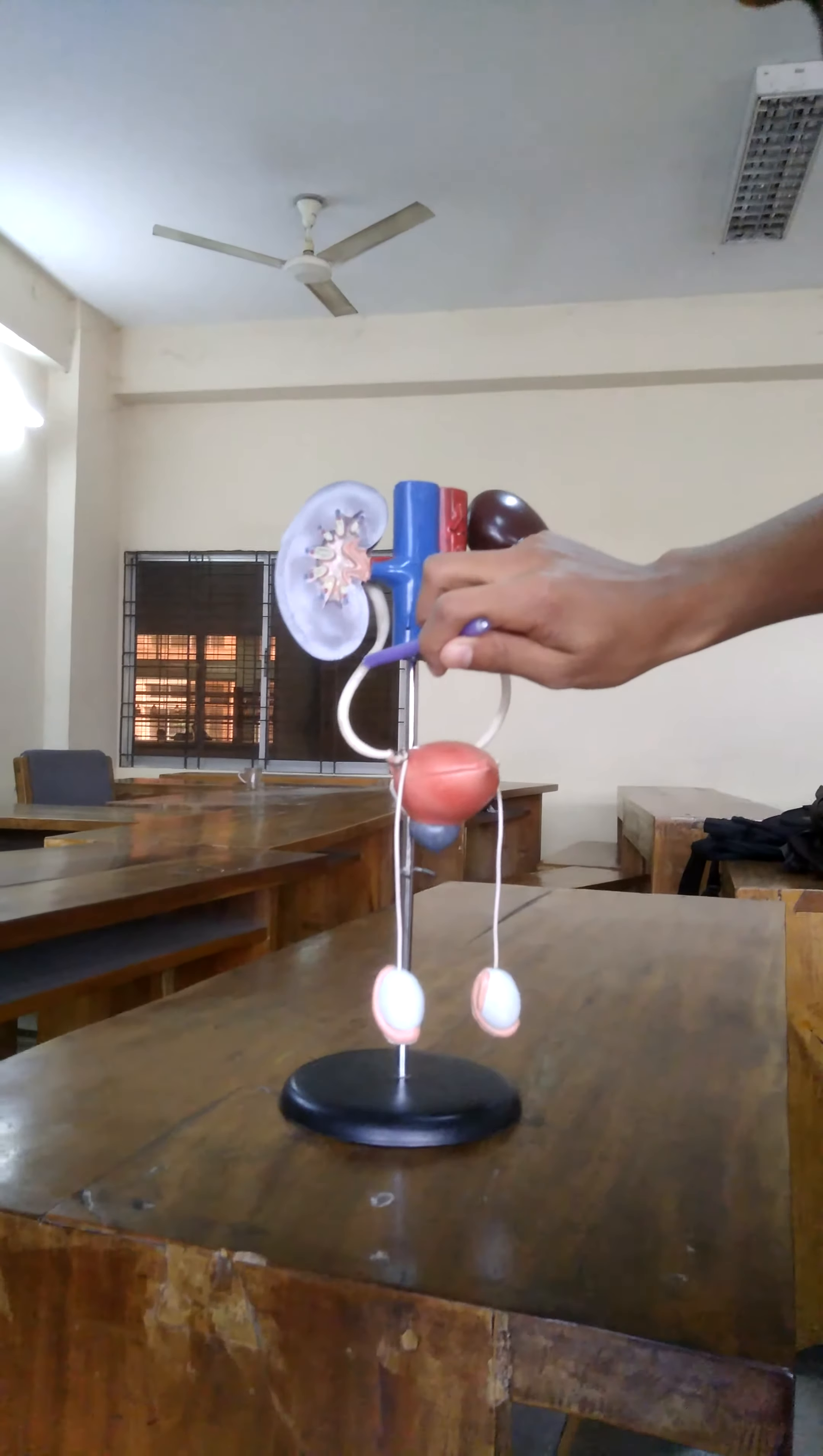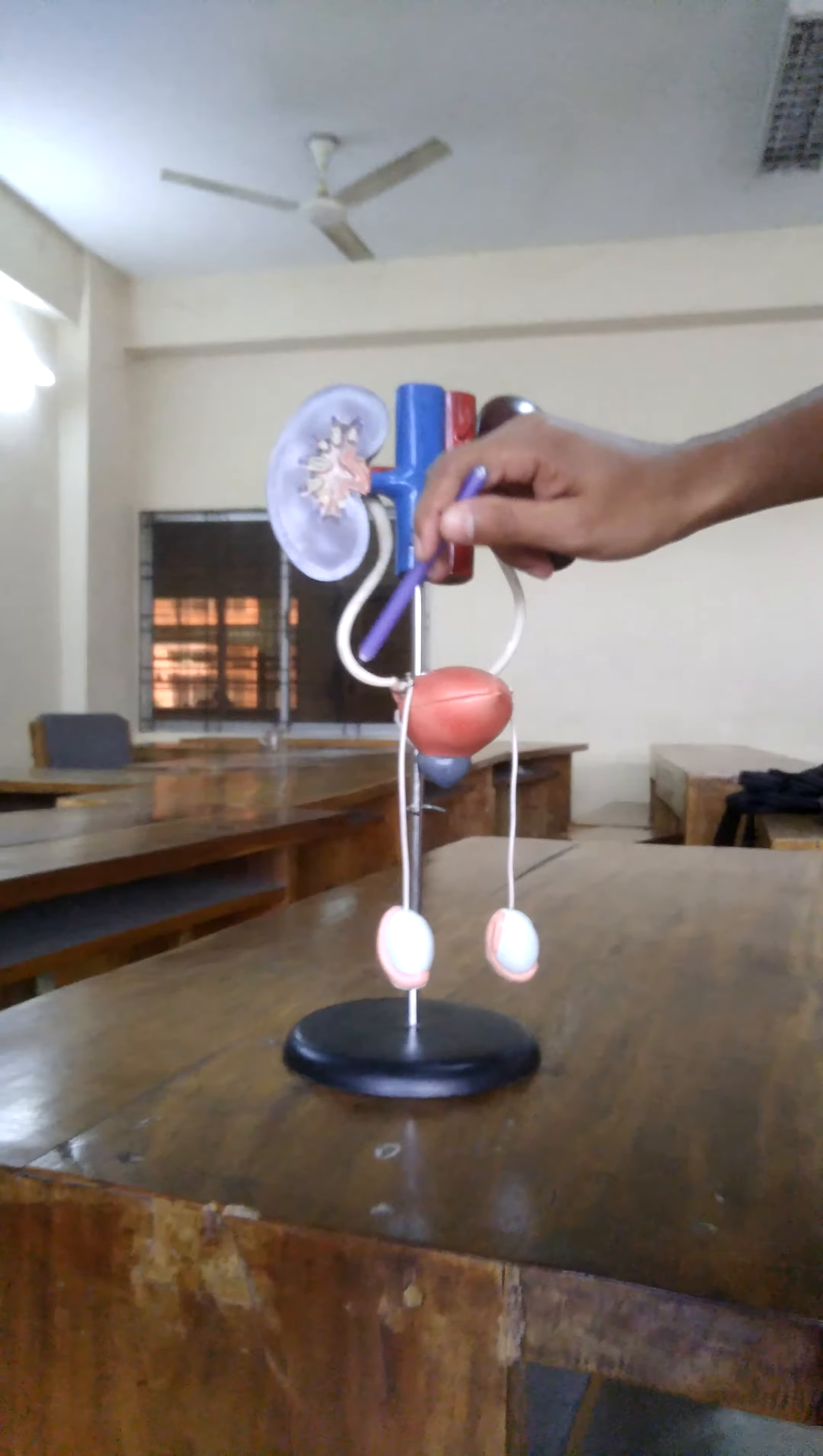It is up to the lower pole of the kidney and its continuation is called ureter.